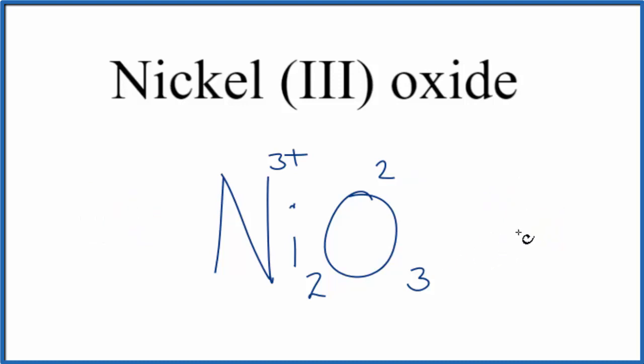So this is the formula for nickel(III) oxide, Ni2O3. And this is Dr. B. Thanks for watching.